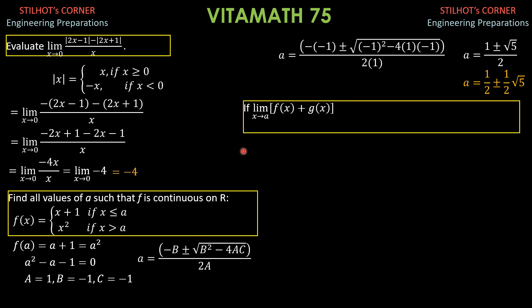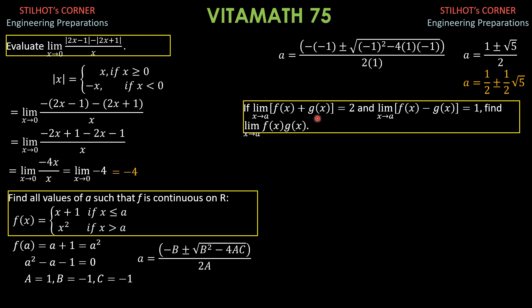For the third problem: if the limit of (f(x) plus g(x)) as x approaches A is 2, and the limit of (f(x) minus g(x)) as x approaches A is 1, then find the limit of f(x) times g(x) as x approaches A. So as x approaches A, the limit of (f(x) plus g(x)) equals f(A) plus g(A) equals 2, and the limit of (f(x) minus g(x)) equals f(A) minus g(A) equals 1.